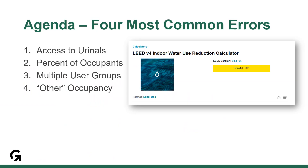For this presentation, we are assuming a basic understanding of the calculator. If you need more explanation to get started, just follow the information on the calculator's instruction tab. We'll jump right in with focusing on the most common pending issues we see with this credit and how to avoid them. If you already know the solution to one of the issues I'm raising, feel free to skip ahead. We have added chapter bookmarks to the video to make it easier to skip ahead or repeat a section.